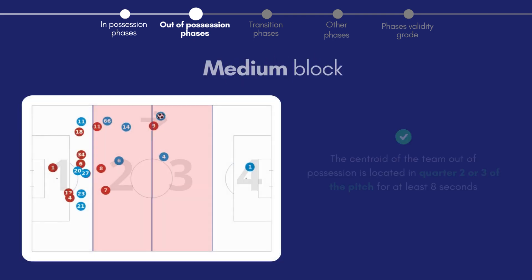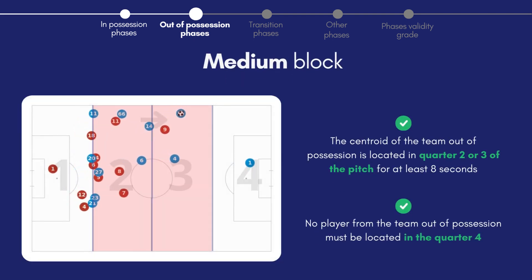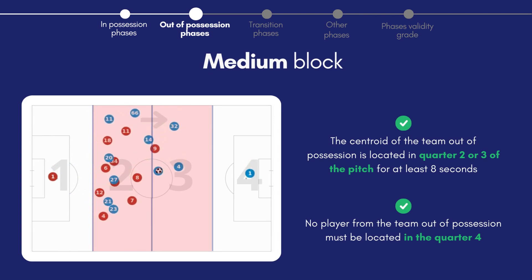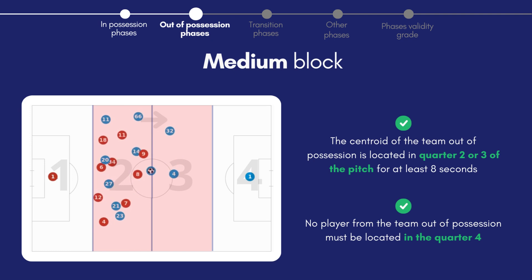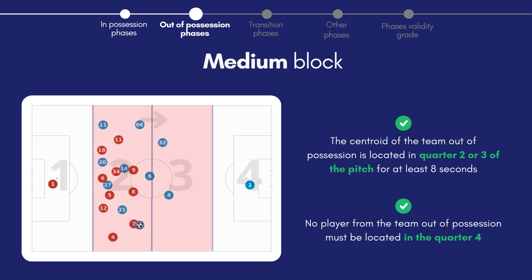Next is the medium block, an out-of-possession strategy focusing on protecting the middle third with no players positioned in the final quarter of the pitch. The priority is to remain compact enough to stop the opposition from playing through the team.